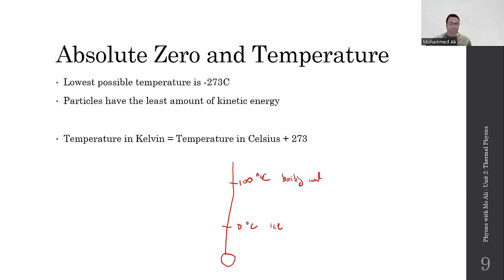The problem with the Celsius scale is that it has negative values. The smallest value is not 0 — zero is the melting point of ice, and 100 is the boiling point of water — which means there is stuff colder than ice. Temperatures like negative 10, negative 20, negative 50 exist. But here's the thing: temperature is defined as the average kinetic energy of the molecules. So at 0 degrees of whatever the unit is, this should mean molecules have 0 kinetic energy — which is false on the Celsius scale, because there's stuff colder than 0.